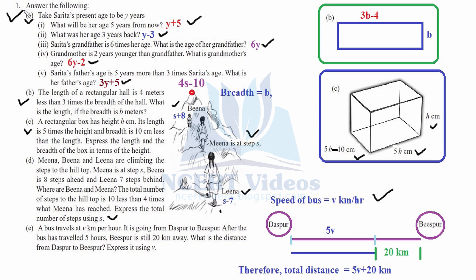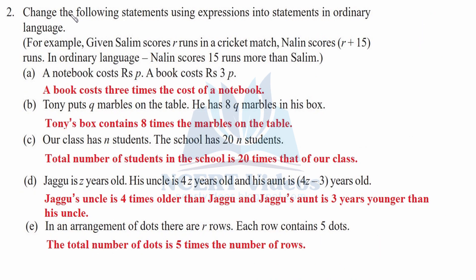Question 2: change the following statements using expressions into statements in ordinary language. For example, if Salim scores r runs, and Naline scores r plus 15 runs, in ordinary language we say Naline scores 15 runs more than Salim. Part a: a notebook costs p; a book costs 3p — it means a book costs three times the cost of a notebook.